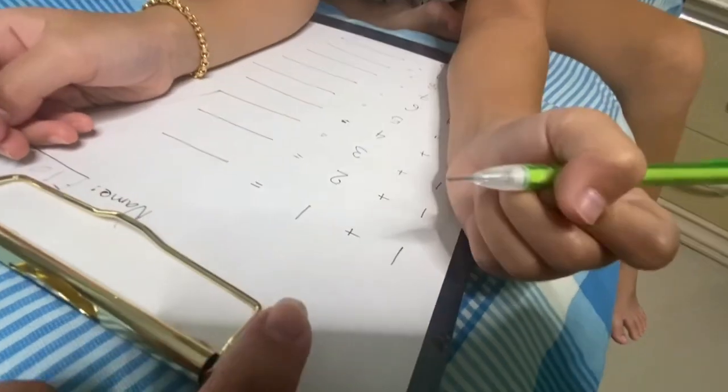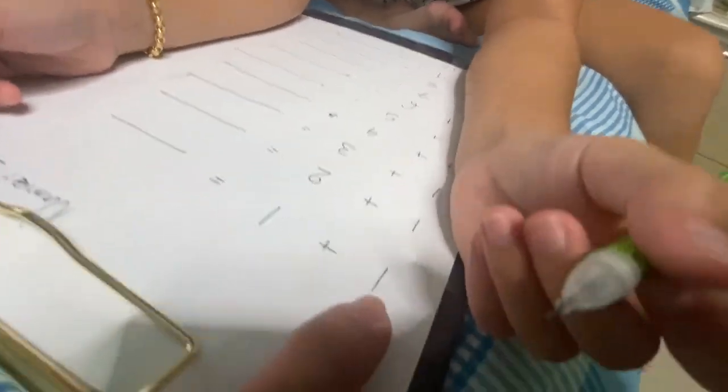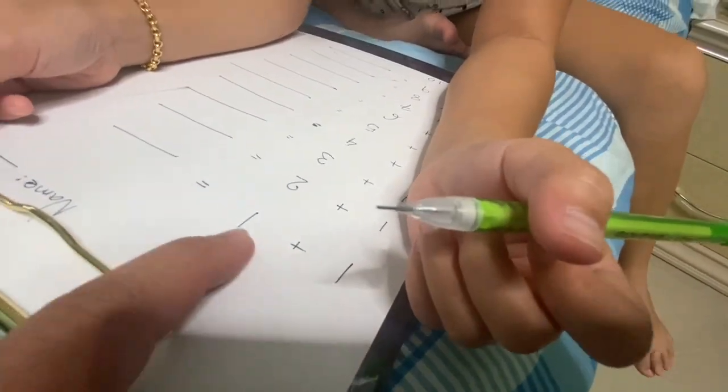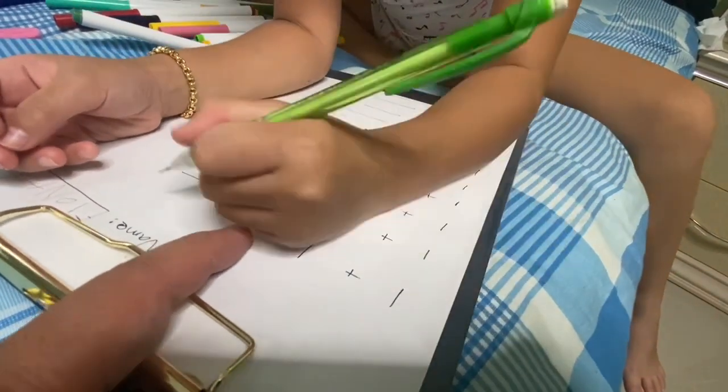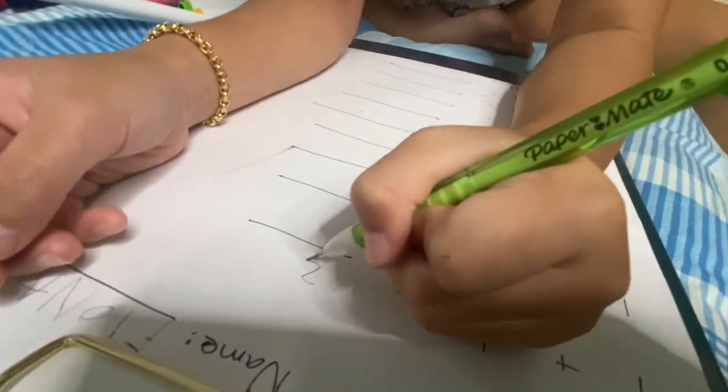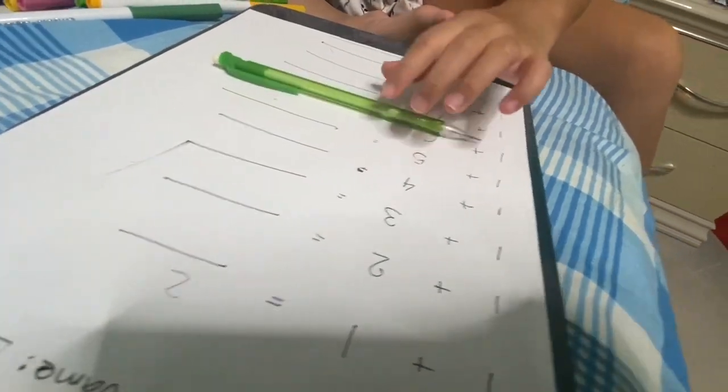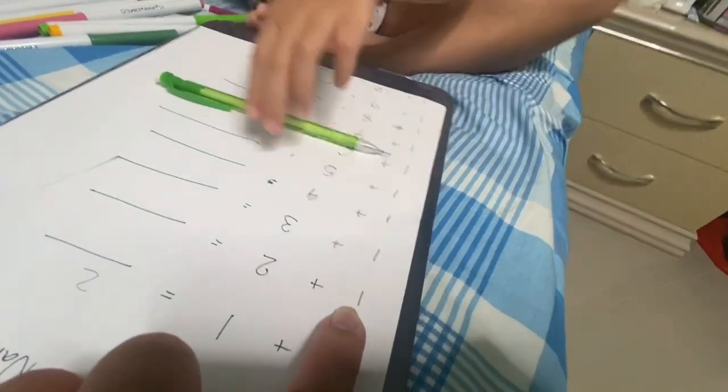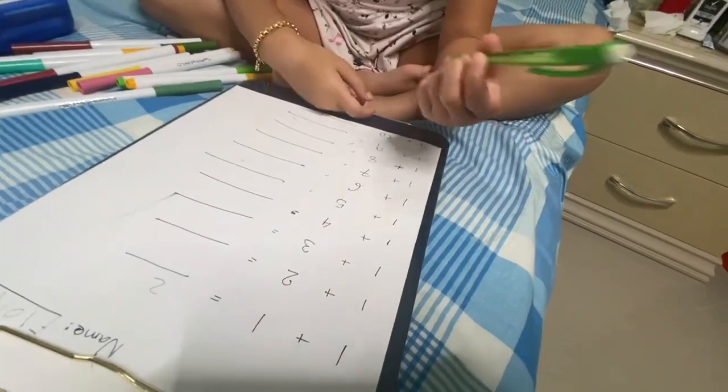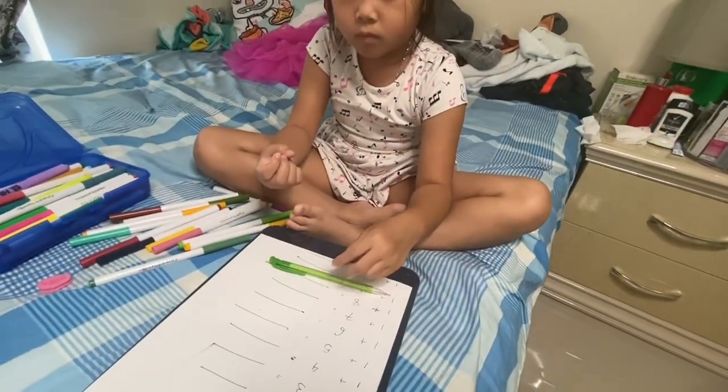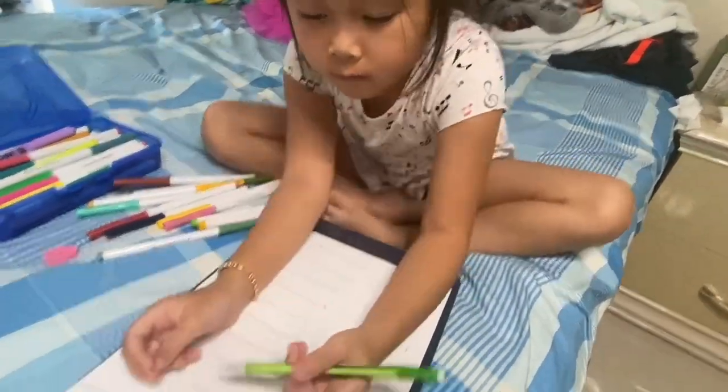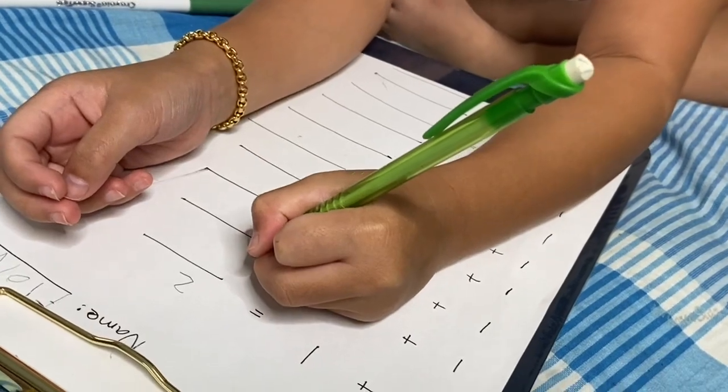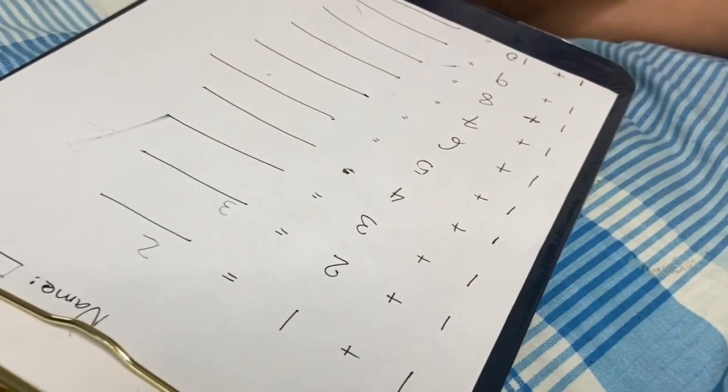What is the first one? One. One what? Say the whole thing. One plus one equals two. Make sure you write the number correctly. Good job. And then next one? One plus two. One plus two. Okay, go ahead. Three. Good job. Make sure you write the number correct. Good.